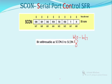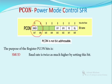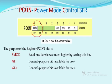The SCON register is bit addressable. Next is the power mode control register (PCON). The SMOD bit in PCON controls the baud rate — it decides whether the baud rate is doubled or remains the same. There are also GF1 and GF0, which are general-purpose user flags. Other bits include PD (power down mode) and IDLE.